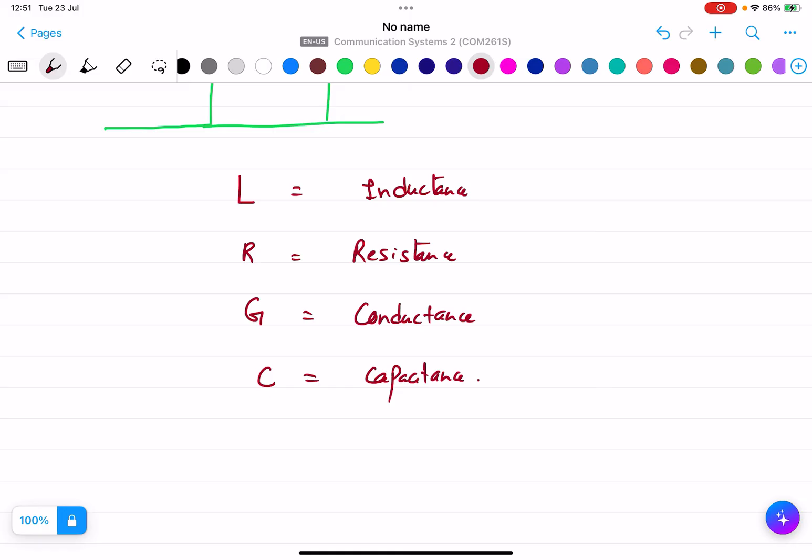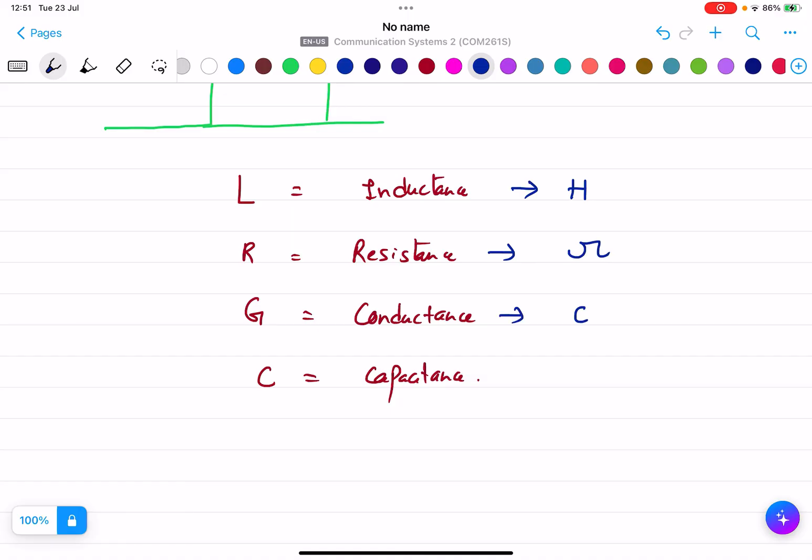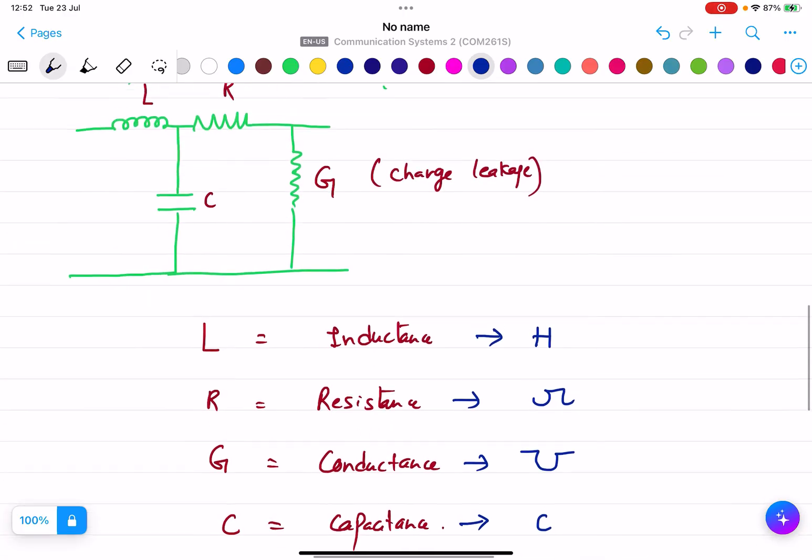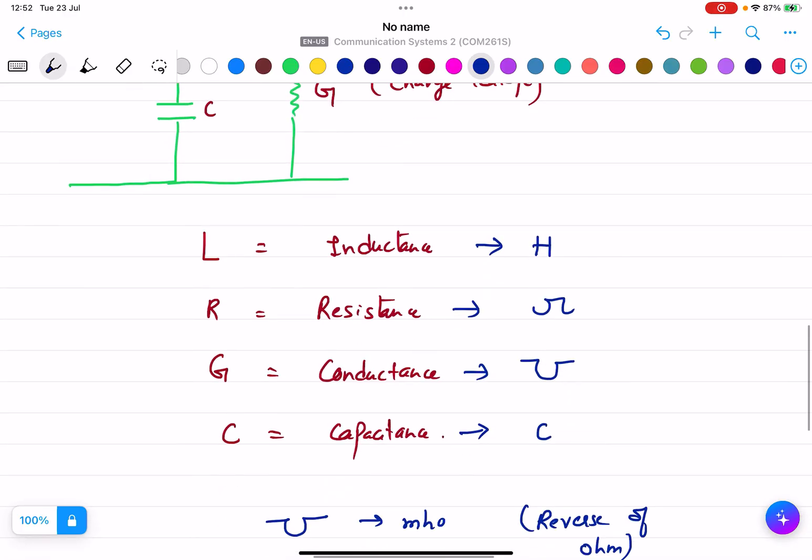What are the units? Inductance is Henry, resistance is ohm, conductance is mho (reverse of ohms), and capacitance is C. Now these are the units, but we are considering a piece of wire from the total wire.